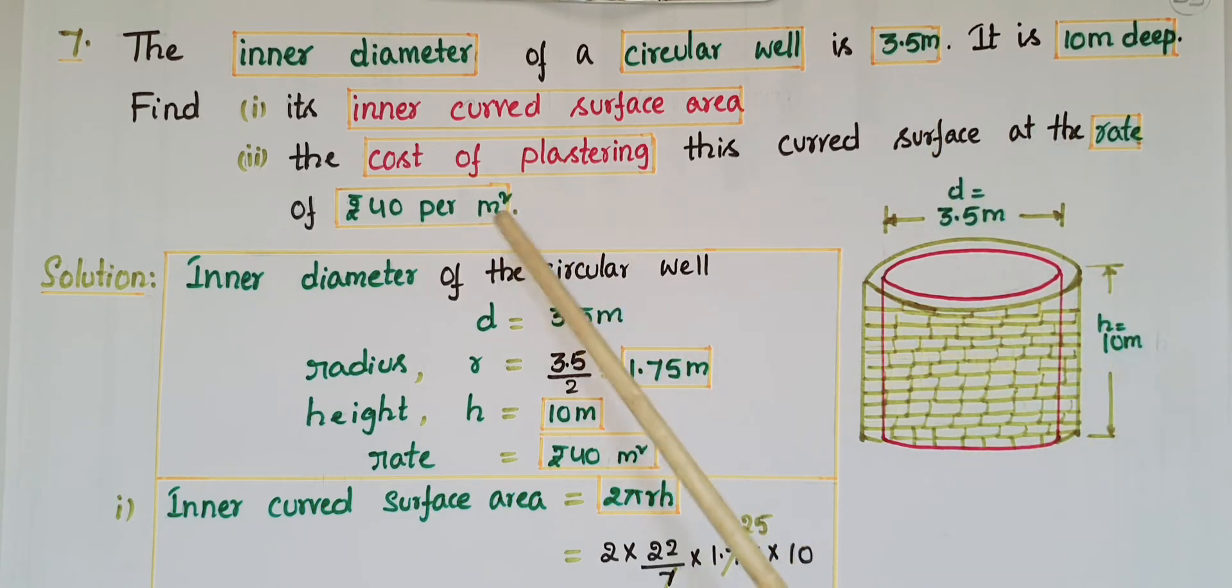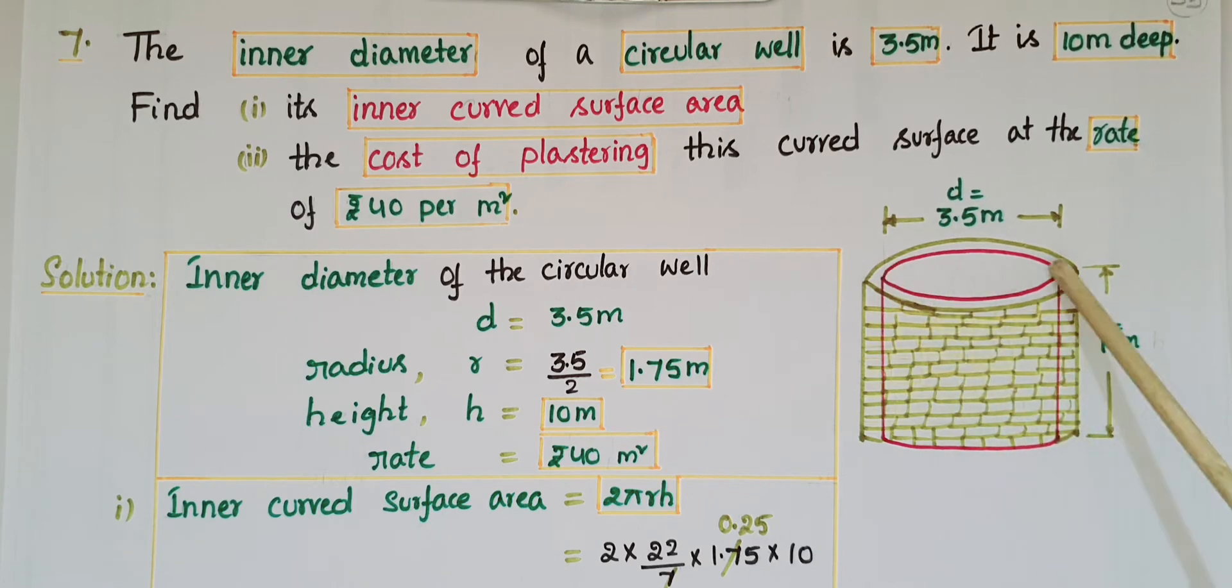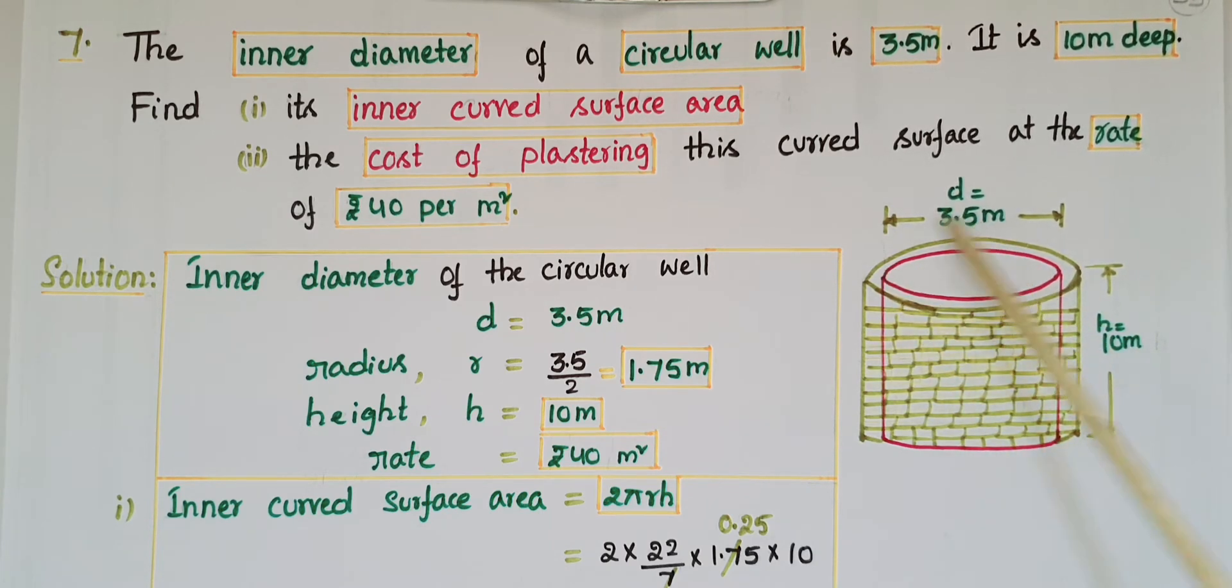So here the dimensions are given. Inner diameter is 3.5 meters. Radius r = diameter/2 = 3.5/2 = 1.75 meters.